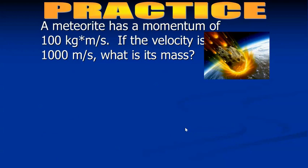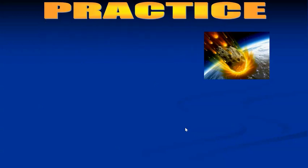Example number two, a meteorite has a momentum of 100. If the velocity is 1000, what is its mass? Well, it gives us what's going to be on the left side of the equation. And it gives us velocity. We just need to find the mass, which is in the middle there. So we'll start with that equation.